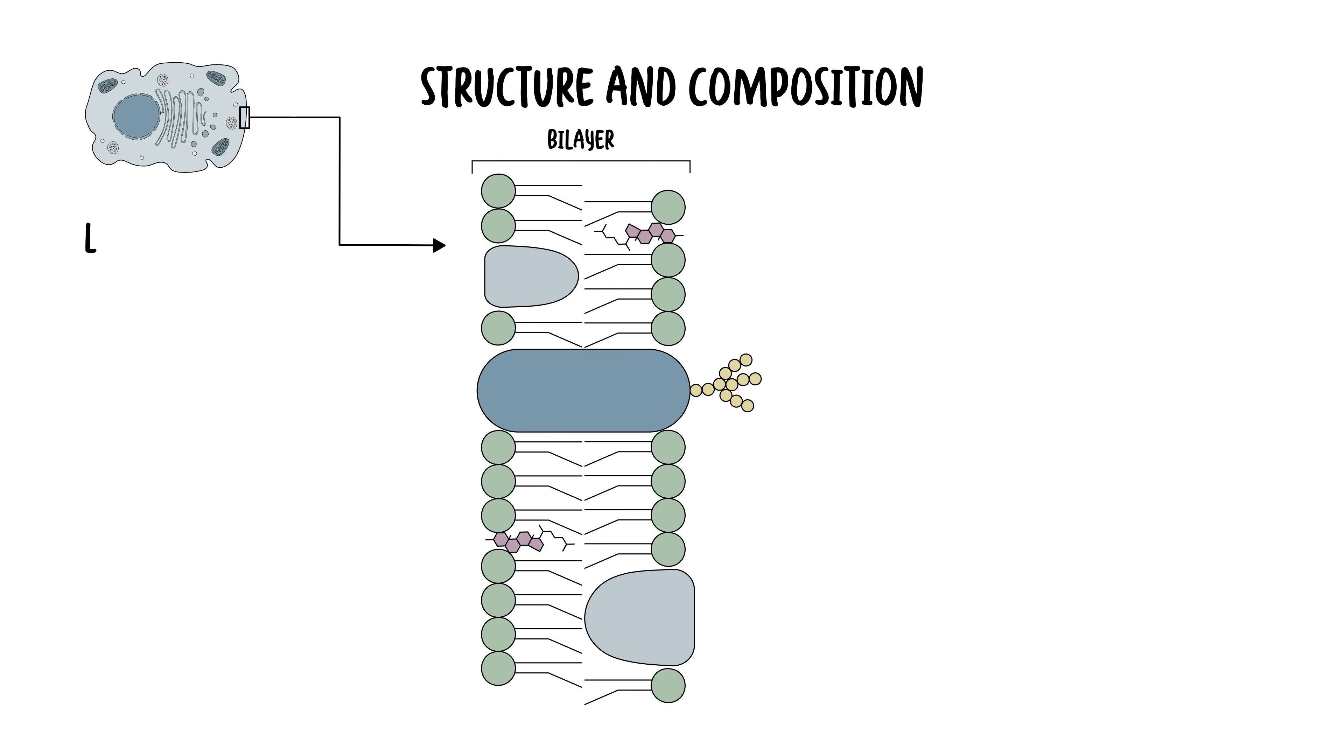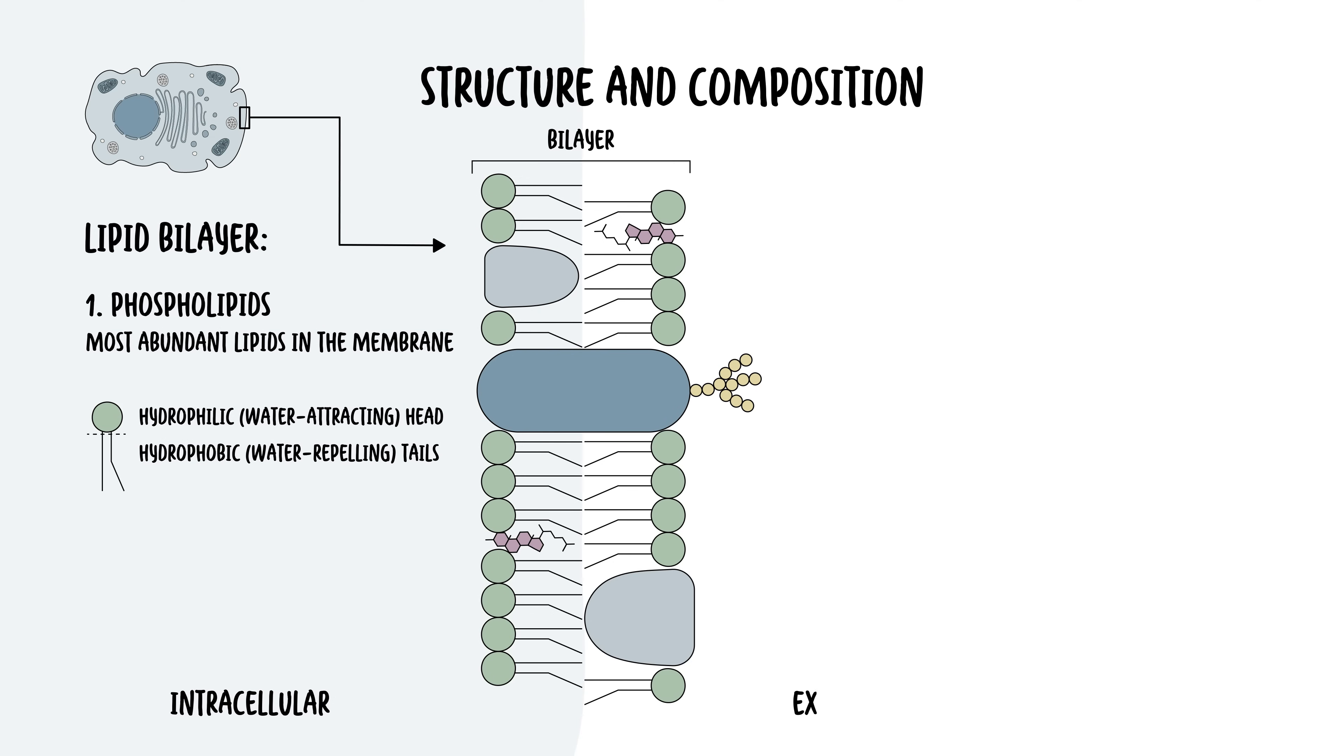The cell membrane is a lipid bilayer composed predominantly of phospholipids. Phospholipids are the most abundant lipids in the membrane. Each phospholipid molecule has a hydrophilic water-attracting head and two hydrophobic water-repelling tails. This amphipathic nature drives the formation of a bilayer, with the hydrophobic tails facing inward and hydrophilic heads facing the aqueous environment inside and outside the cell.